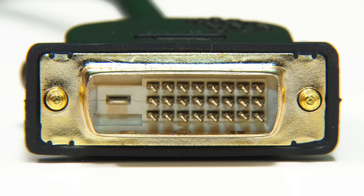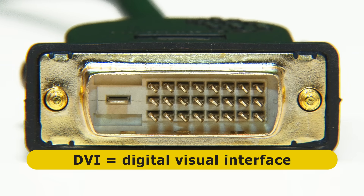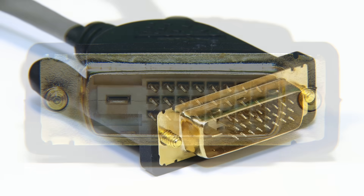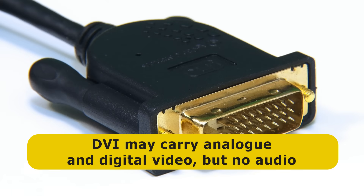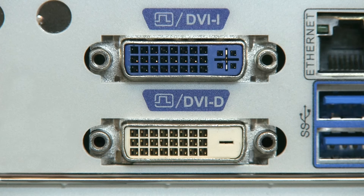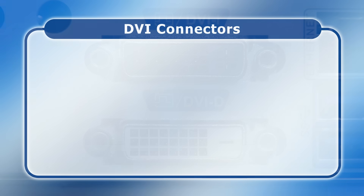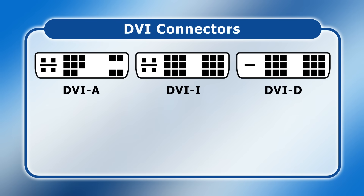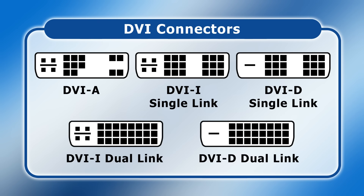Following VGA, we come to the Digital Visual Interface, or DVI. This was introduced in 1999 by the Digital Display Working Group, and despite its name, may carry both analog and digital video signals, but no audio. Many different DVI connectors are available which have the same form factor but different pins — specifically configurations known as DVI-A, DVI-D, and DVI-I, with DVI-D and DVI-I connectors also able to be single or dual link.